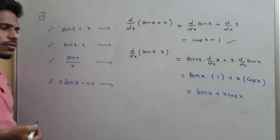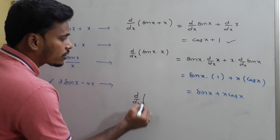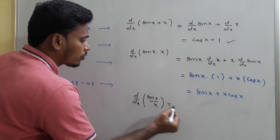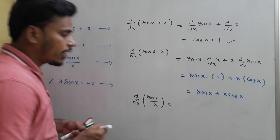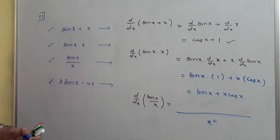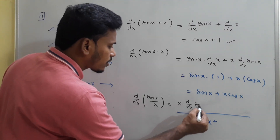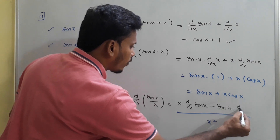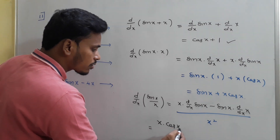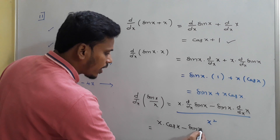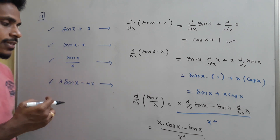For sin x divided by x, use the quotient rule: denominator squared is x². The numerator is denominator times derivative of numerator minus numerator times derivative of denominator: x times cos x minus sin x times 1. So d/dx of sin x/x equals (x cos x - sin x) / x².